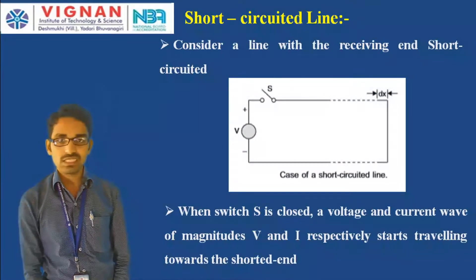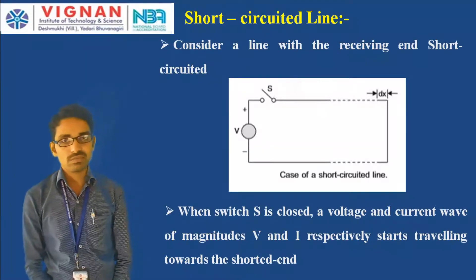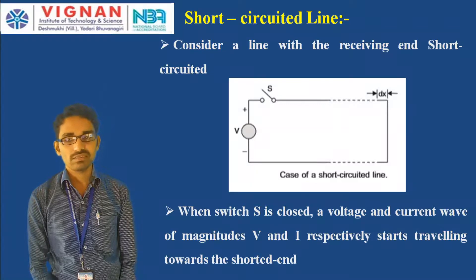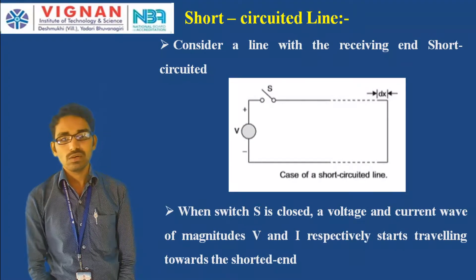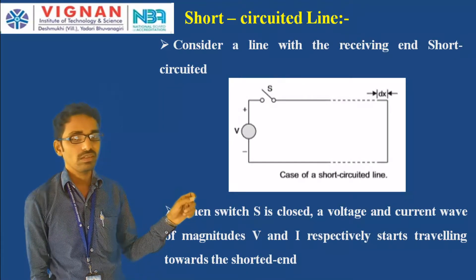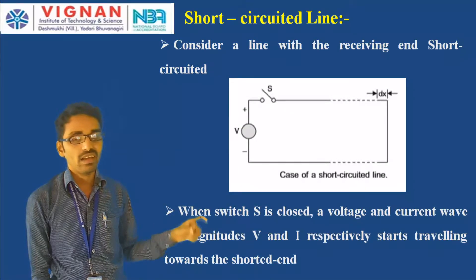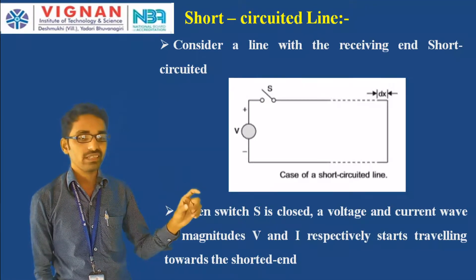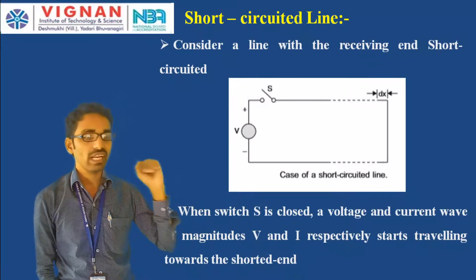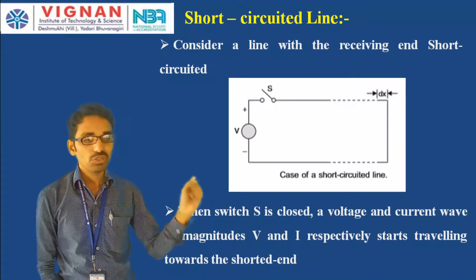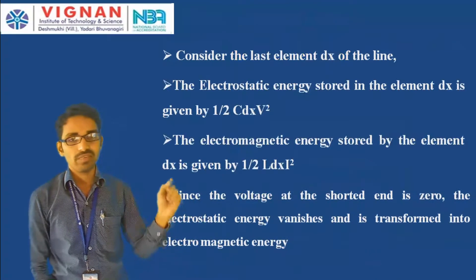Let us consider a long transmission line which is short-circuited at the receiving end — that means we are connecting it with a wire. When the switch S is closed, voltage and current waves of magnitude V and I respectively start traveling towards the shorted end, that is the short-circuited receiving end.